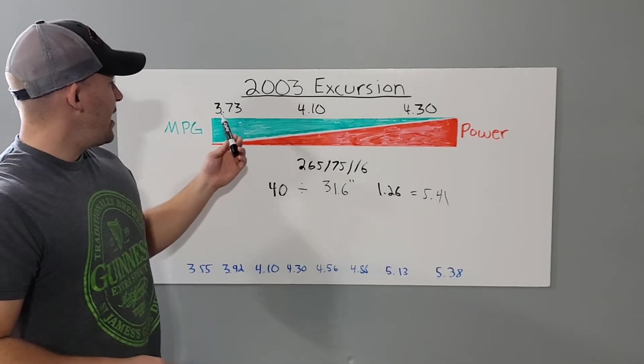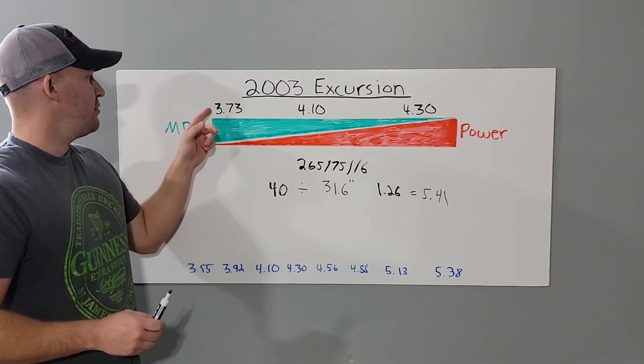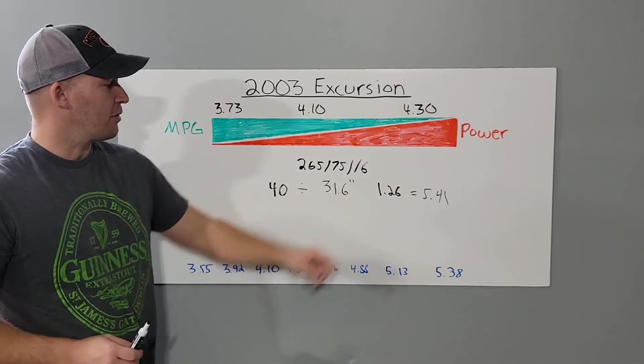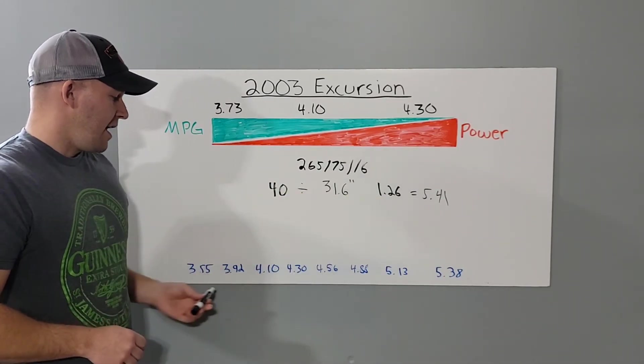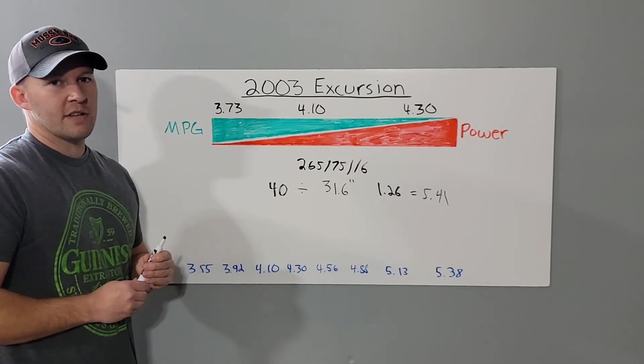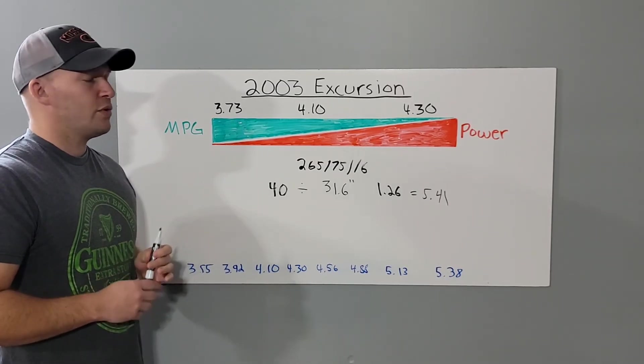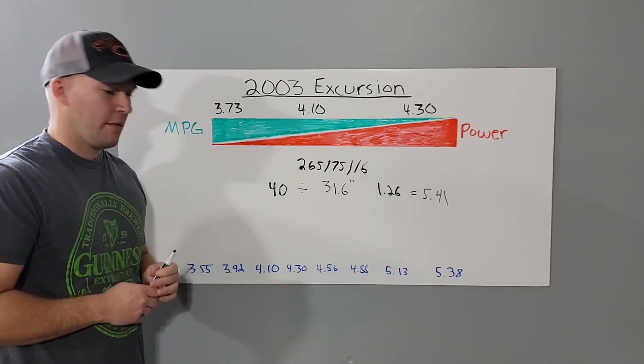If you wanted to change and you wanted better gas mileage, if that was your priority, then you would just take 3.73 and multiply it by 1.26 and then pick a corresponding gear size for that. Of course, you would still need speedometer calibration for that.